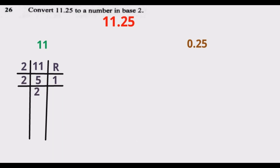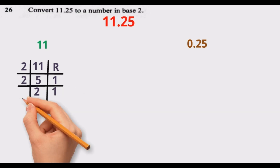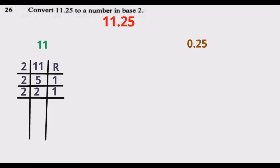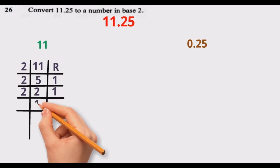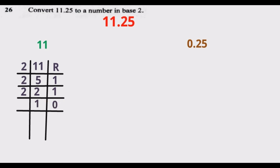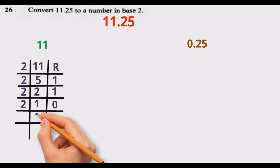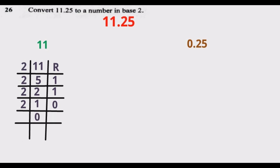Then 2 into 5 goes two times, remainder 1. 2 into 2 goes one time, remainder 0. 2 into 1 goes zero times, remainder 1.